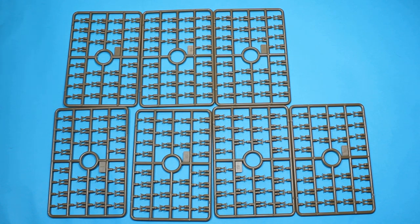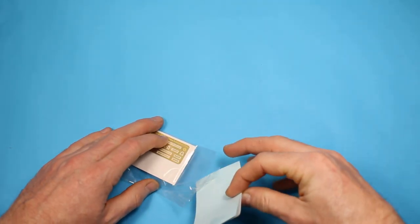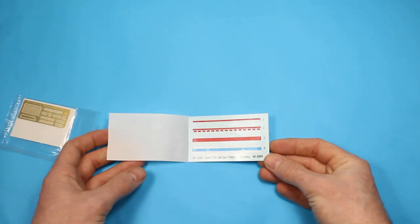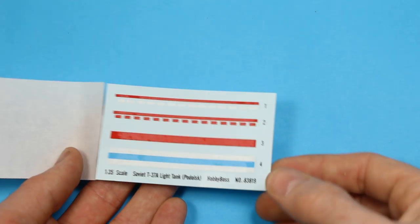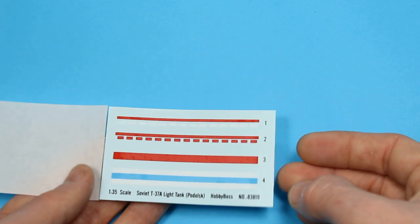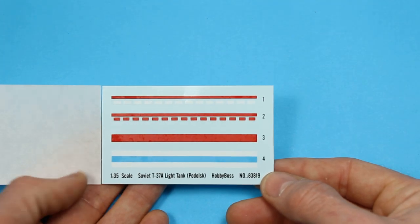Then we've got the photo etch and decals. You can see the turret bands for the different marking options. The striking one is the Finnish one with that blue and white. You've got each version for the Soviet ones as well. The carrier film looks very tight with a glossy finish, and Hobby Boss decals are pretty good.